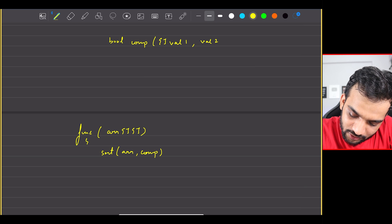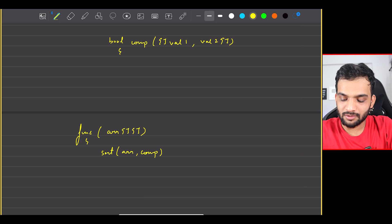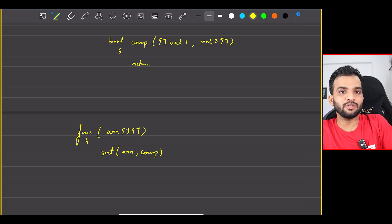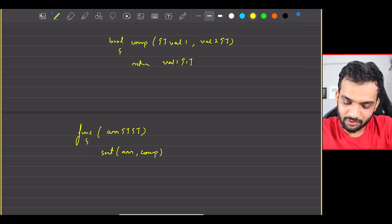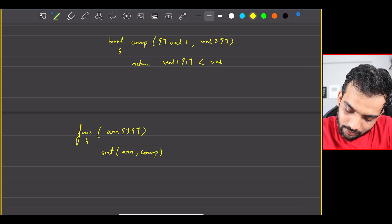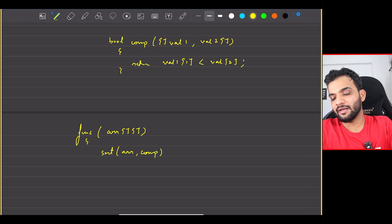And I'm going to say, hey listen, return. You're going to sort it according to the ending time. The faster it ends, it's better. So value 1 will have the ending time. If that's less than value 2, perfect fine. That's going to be the comparator.